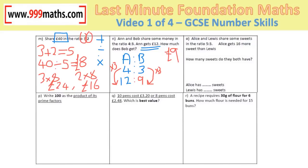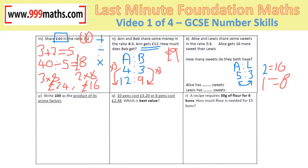The next ratio type doesn't give the total or one person's amount — it tells you the difference. Alice and Lewis share money in the ratio 5 to 3, and Alice gets 16 more than Lewis. On the ratio, Alice has 2 parts more, and those 2 parts equal 16. So 1 part equals 8. Alice gets 5 times 8 equals 40, and Lewis gets 3 times 8 equals 24.